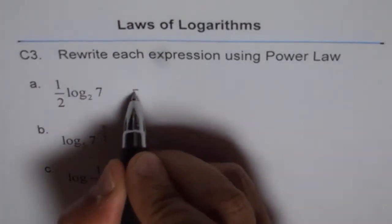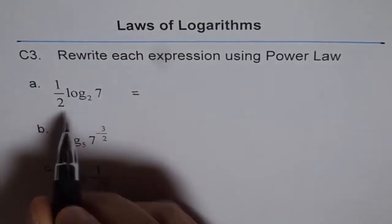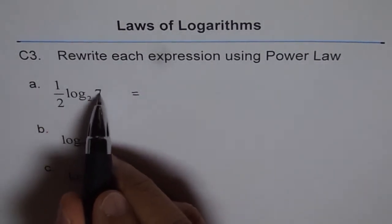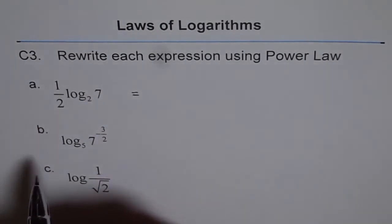So this could be written as half times log base 2 of 7. So basically 7 to the power of half is what? It is equal to square root of 7.